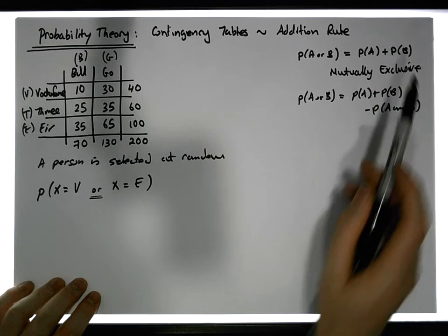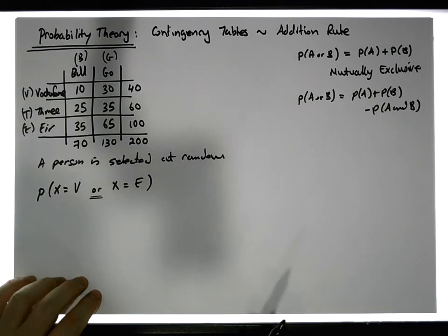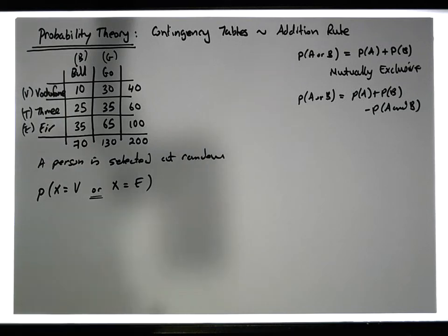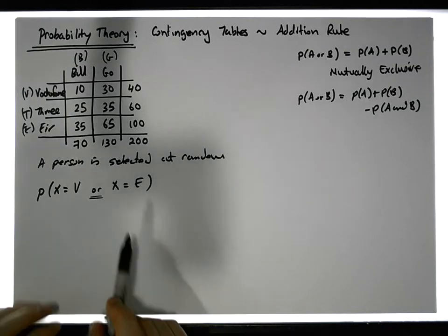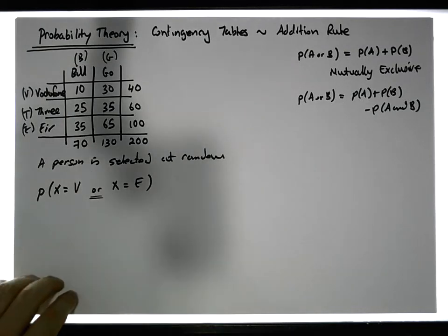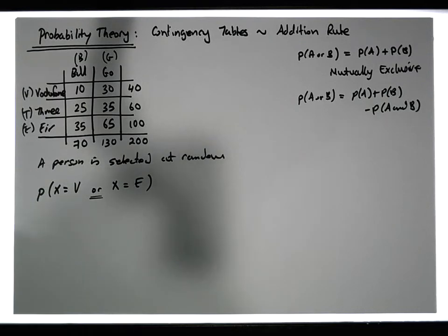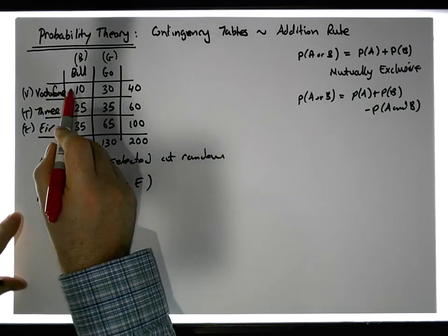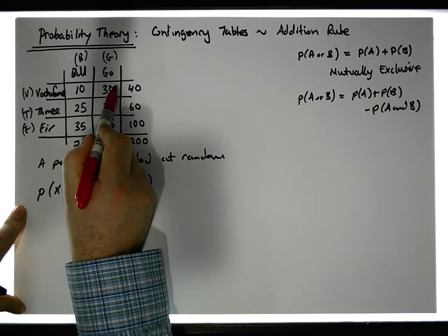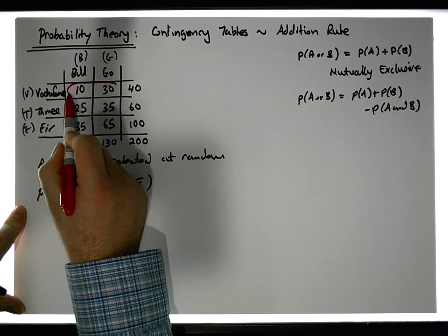I'm wondering, are these two events mutually exclusive of each other? Well, if they're mutually exclusive of each other, it means they share nothing in common. I think we can see that from a Venn diagram perspective, the Vodafone customers are these customers here and the Air customers are these customers here.